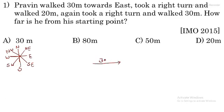He took a right turn. His left is this side and right is this side. So right turn liya aur 20 meter walk kiya. After that again took a right turn — again the right turn — and completed 30 meters distance. Now the question is how far is he from his starting point.